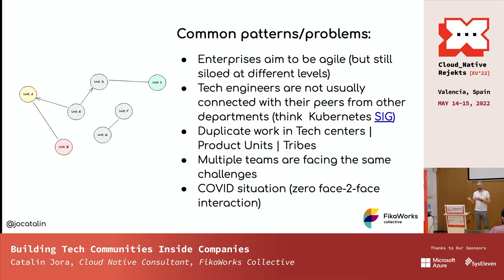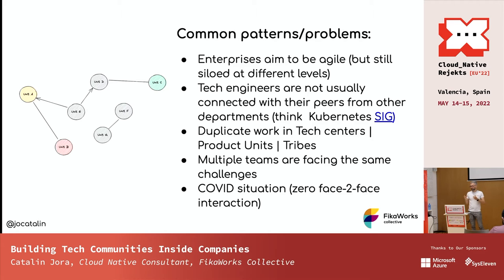Why do we still have silos? We have silos at different levels. For example, everybody's moving to Azure DevOps — it's a great tool — but every organization, every product unit, every tribe will have their own organization in Azure DevOps and it's not shared with everybody else. So you cannot see how they build pipelines, what projects they have, how they're running stuff in Kubernetes, how they're doing deployments. Tech engineers are not connected because they can't access the source code in some cases.